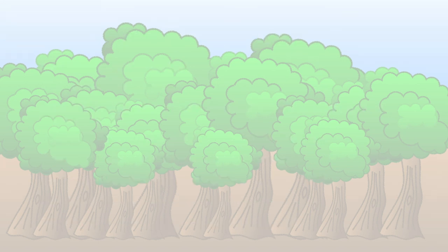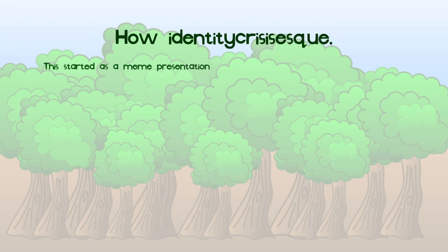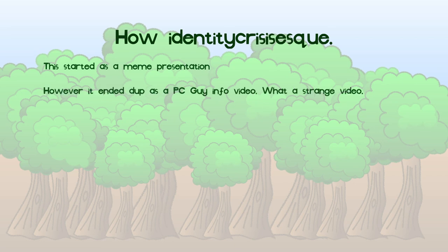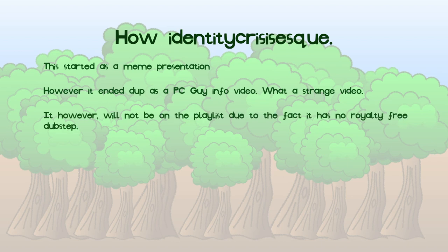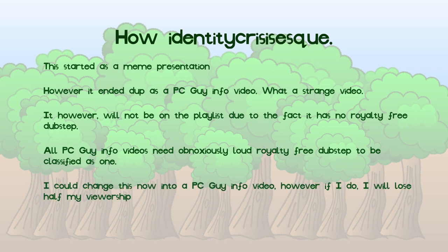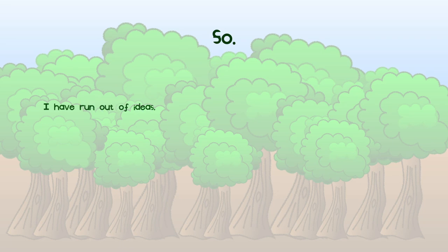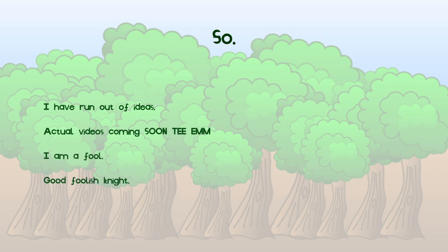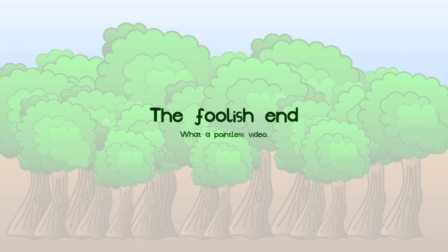The next slide of the presentation is about the state of the presentation. This presentation is a fool. This is because it started off as another meandering tree presentation, however it slowly turned into what may be classified as a PC guy info video. It will not be on the playlist however, as it lacks royalty-free dubstep. To be officially classed as a PC guy information video, it must at all times have obnoxious loud royalty-free dubstep rather than text-to-speech narration. I could change this to a true PC guy information video, however doing so will mean I will lose half my audience. This is incredibly foolish. So, I have run out of video ideas and ideas for this video. I shall make a decent video that will get views soon. I am a fool. Good foolish night. The foolish end. What a totally pointless video. This is incredibly foolish.